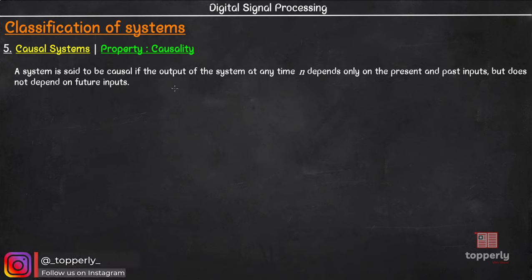This definition if written mathematically, then the output of a causal system should be an equation of the form y of n equal to function of x of n, x of n minus 1, x of n minus 2, etc.